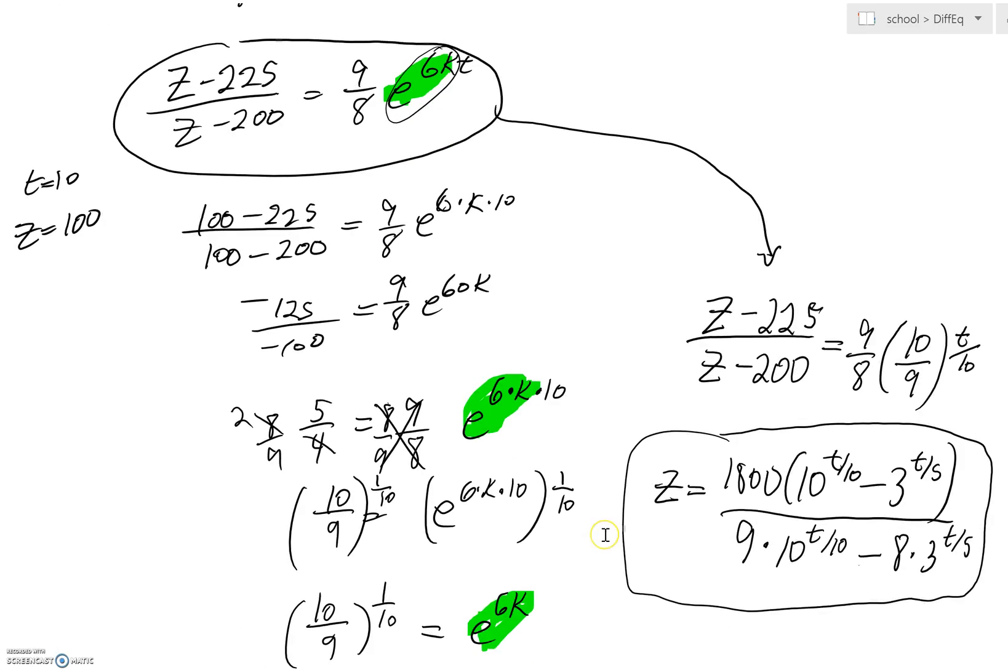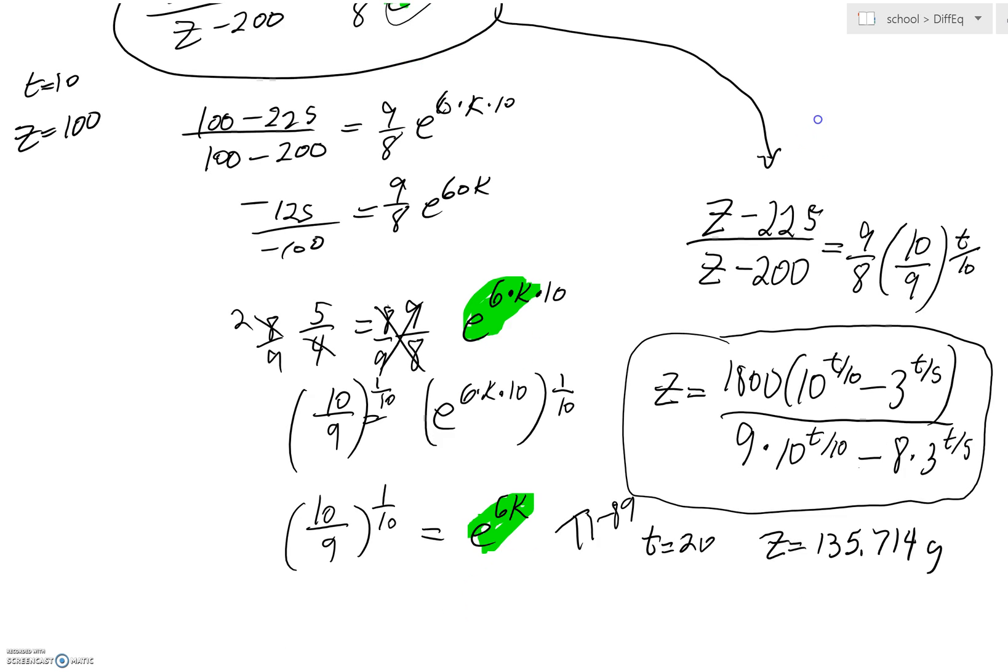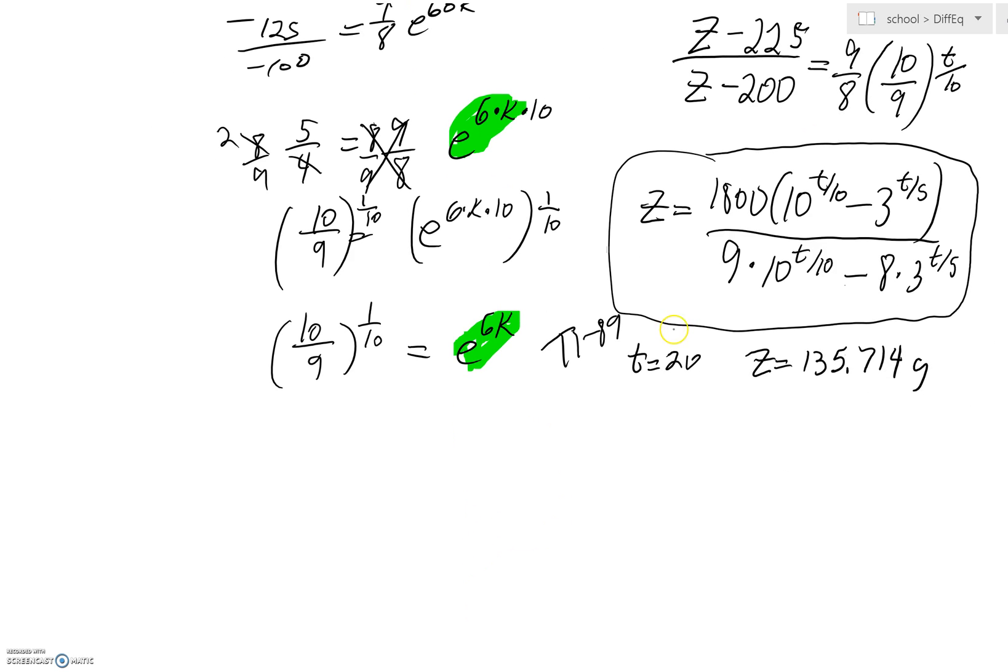And we'll just bring that down here. So, at t equals 20, z equals 135.714 grams. So, that's a real great way, and that's from the TI-89, that you can get your answer. Now, taking it a step further,